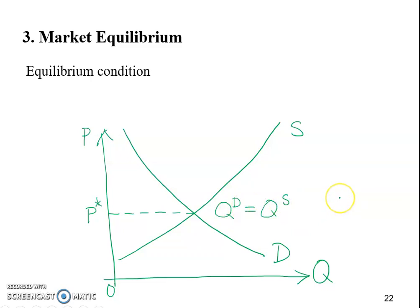In other words how much people or the buyers on the market are willing and able to buy equals how much the sellers on the market willing and able to sell. So this specific quantity level here down on the horizontal axis, let's label it as Q star. So we're going to define these as the market equilibrium.